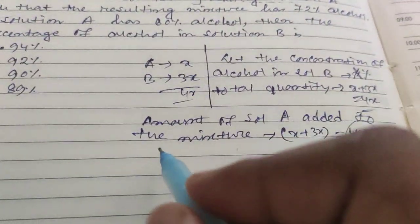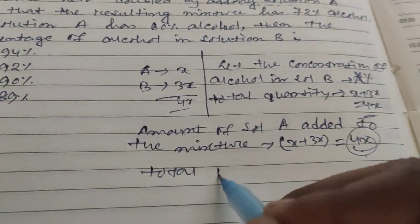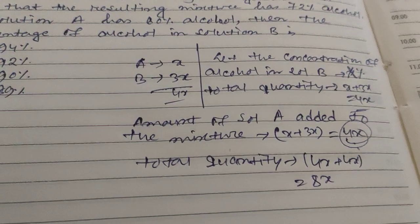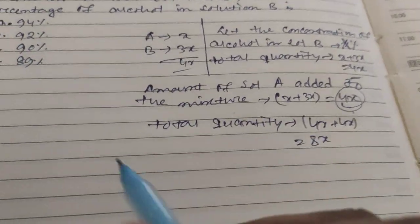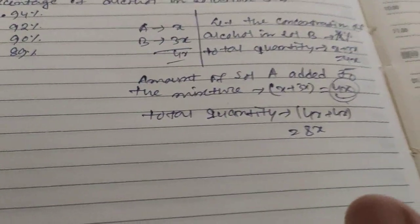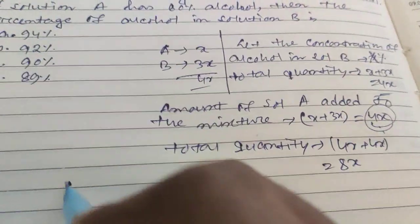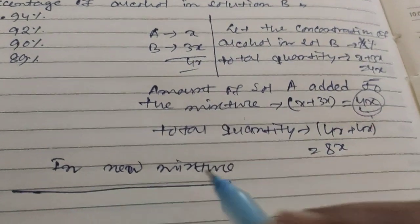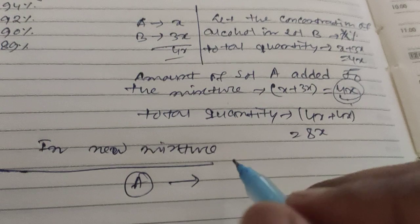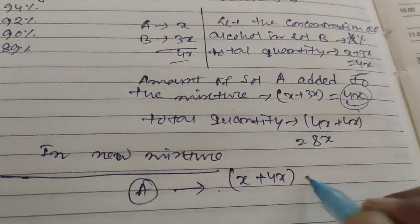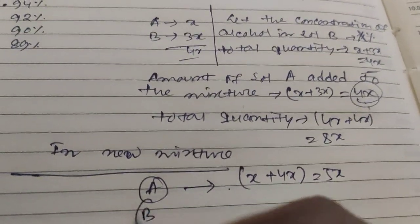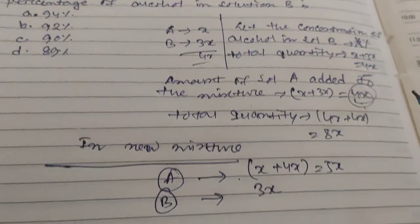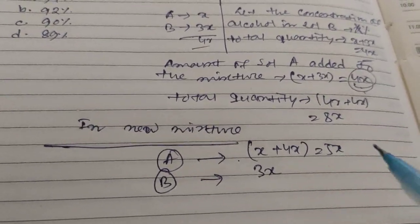Total quantity is 4x plus 4x, which is 8x. Now, quantity of A and B in the new mixture: quantity of A was previously x, now 4x is added, so it is 5x. And for B, it remains 3x.